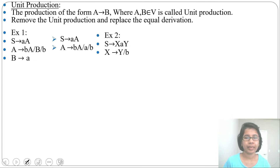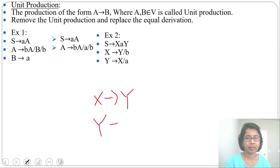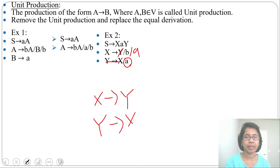Next example: X tends to 'XaY', X tends to 'Y' or 'b', Y tends to 'X' or 'a'. The unit productions are X tends to Y, and Y tends to X. To remove X tends to Y: wherever Y appears in X's production, replace it with what Y derives — 'X' or 'a'. So X can also derive 'b' or 'a'. After removal: X tends to 'XaX', X tends to 'a' or 'b'.